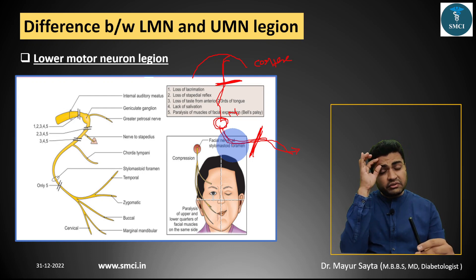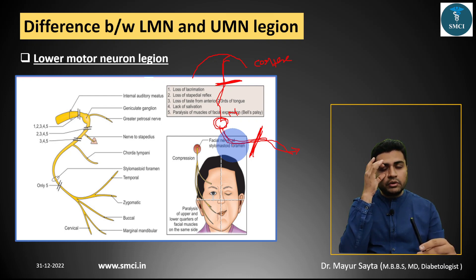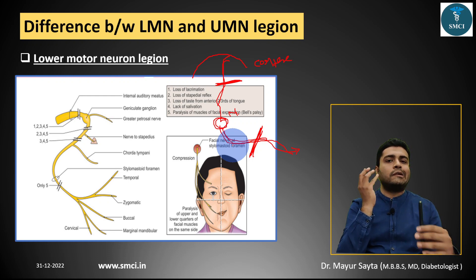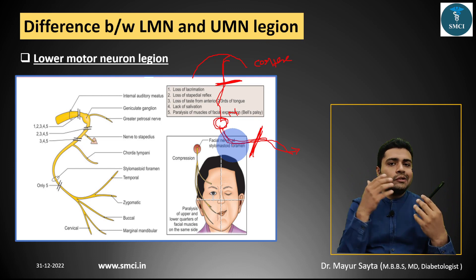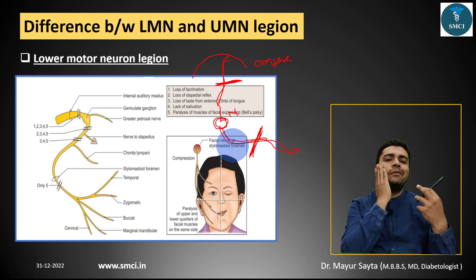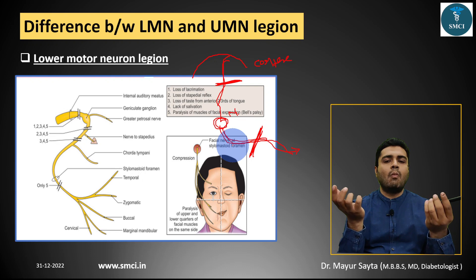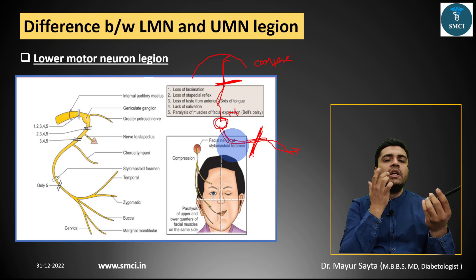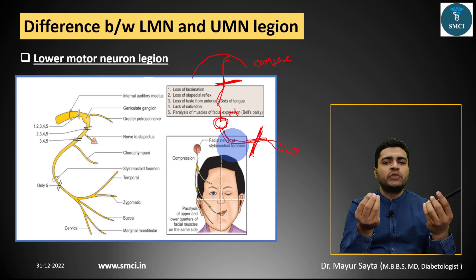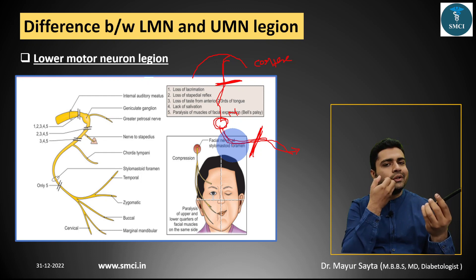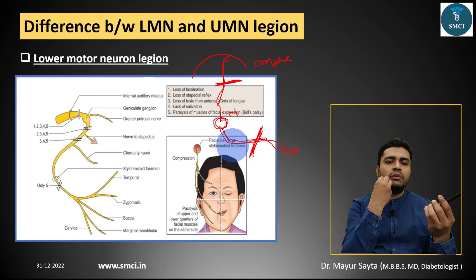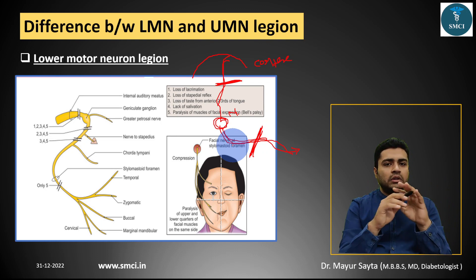The eyeball will not close properly. When the patient tries to speak or make facial expressions, the face deviates toward the normal side because there is no movement on the affected side. The orbicularis oris is also affected, so the patient cannot hold the mouth closed properly — causing dribbling of saliva during chewing. Food also accumulates in the cheek as the paralyzed facial muscles cannot clear it.